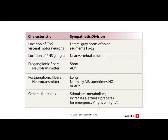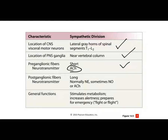Comparing and contrasting: the sympathetic division is thoracolumbar, ganglia are near the vertebral column, short pre-ganglionic axon, and always uses acetylcholine for the pre-ganglionic fiber. The post-ganglionic fiber is much longer and uses norepinephrine most of the time, with some examples using nitric oxide or acetylcholine. This system stimulates metabolism, increases alertness, and prepares you for emergencies.